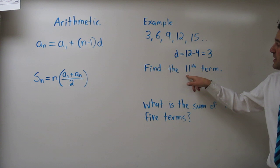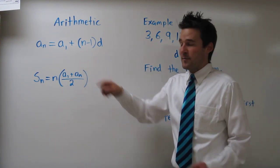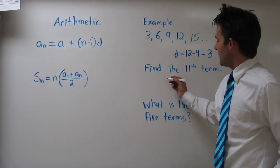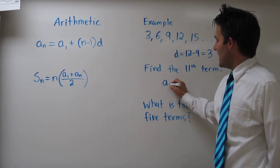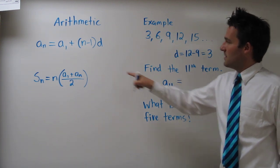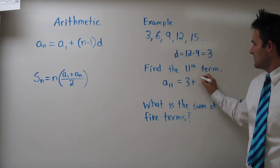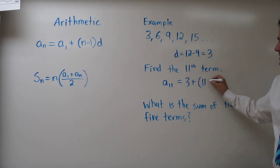Using that 3, we can find the 11th term. We're going to use this formula. So our n will be 11, because we're trying to find the 11th term. So a sub 11 equals a sub 1, so the first term 3, plus our n which is 11 minus 1, times our common difference 3. So 11 minus 1 is 10, times 3 is 30. 30 plus 3 is 33, which is our 11th term.